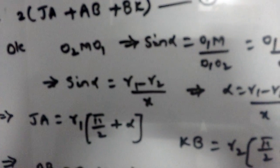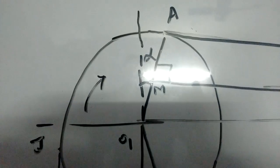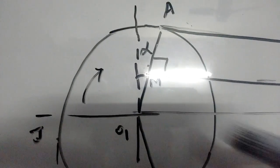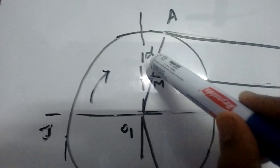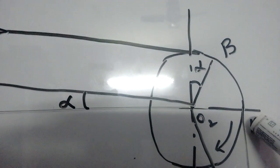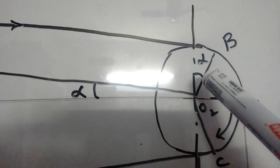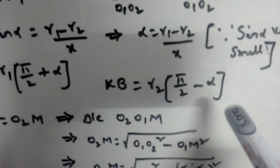The length of arc JA equals R1 into (pi/2 plus alpha). Likewise, the length of arc BK equals R2 into (pi/2 minus alpha). So JA equals R1(π/2 + α) and BK equals R2(π/2 − α).